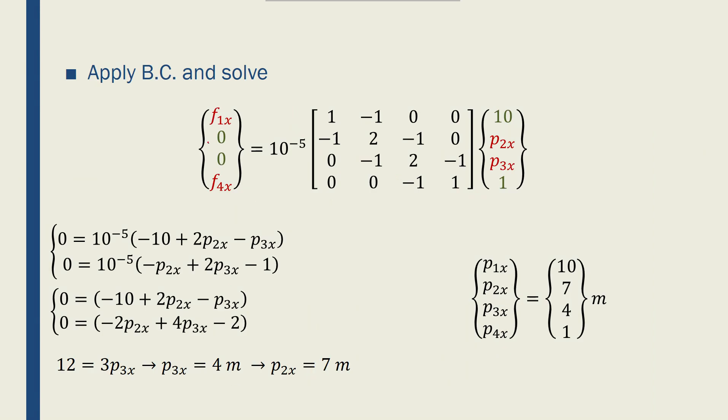This is the boundary conditions. We don't know the fluid flow rate at nodes 1 and 4, but we know the potentials there. However, we don't know the potentials at the interior nodes, but we know there is no external potential applied to nodes 2 and 3. I've written the knowns in green and the unknowns in red. I have 4 equations and 4 unknowns.